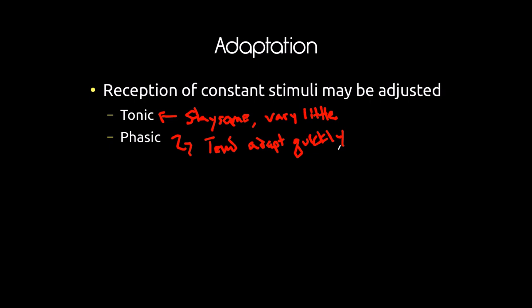The point of adaptation is to free up the brain from unneeded stimuli. You don't need to feel the shirt you're wearing all the time — it doesn't make sense to process that constantly. So in order to decrease the amount of information sent back to your brain, those receptors just shut off. Phasic receptors adapt very quickly and start shutting off.